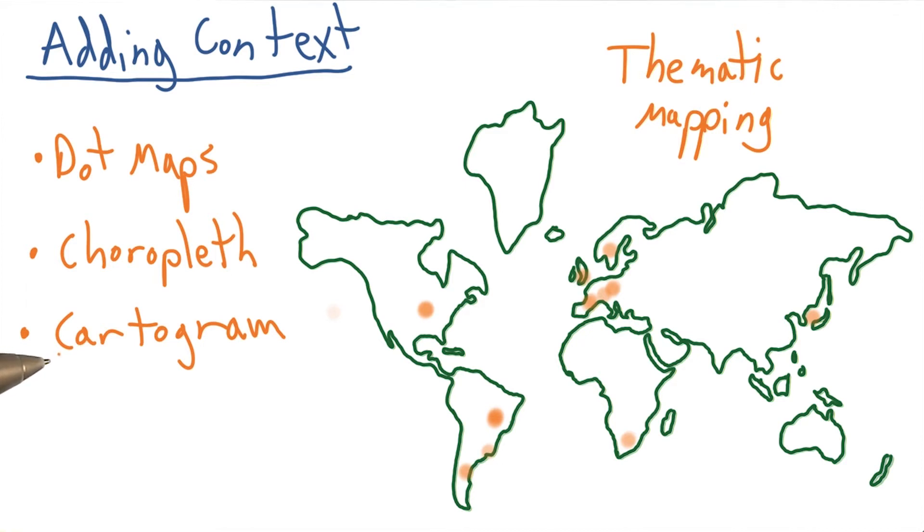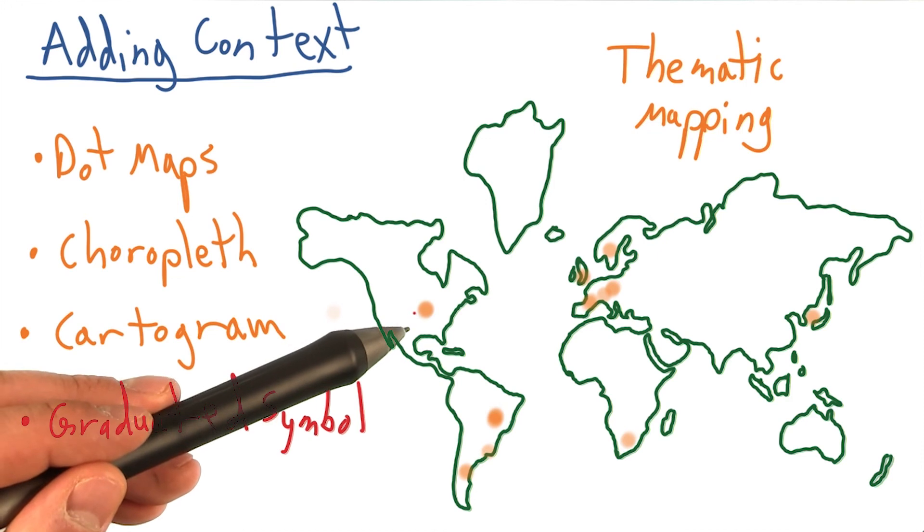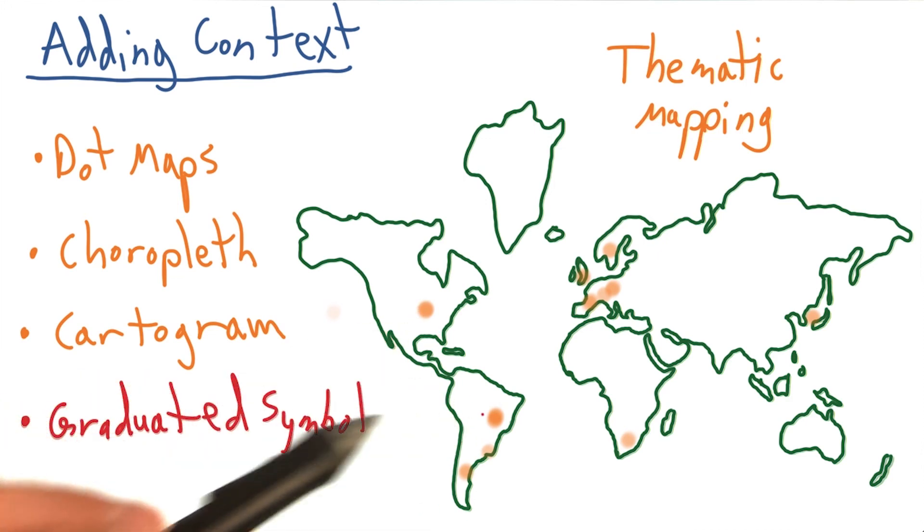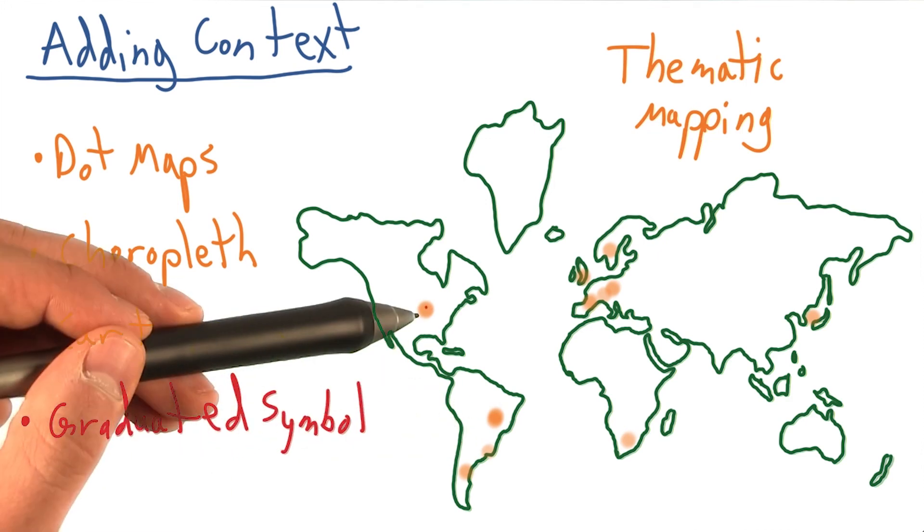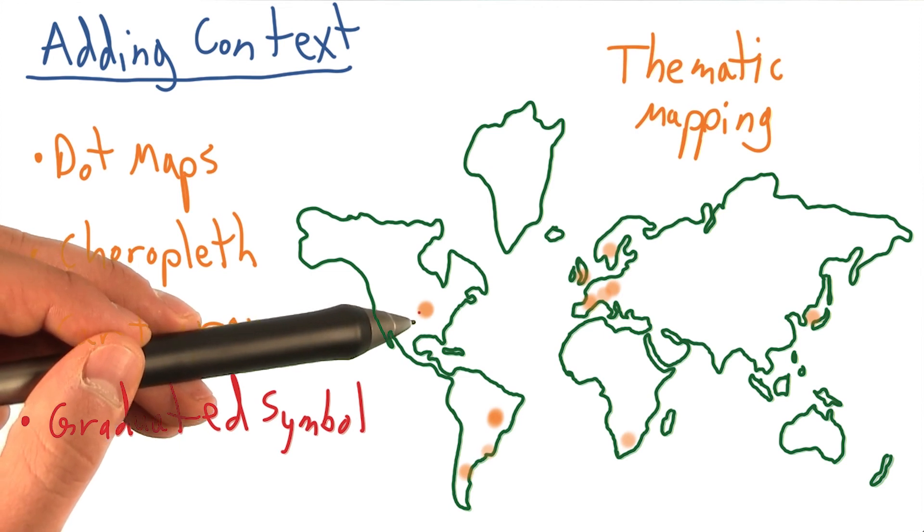It is a symbol map because we place some symbol, in our case circles, on the map. And it is graduated because the area, or radius, in our case, of the symbols varies depending on the data they represent.